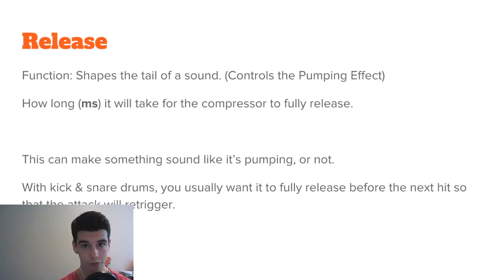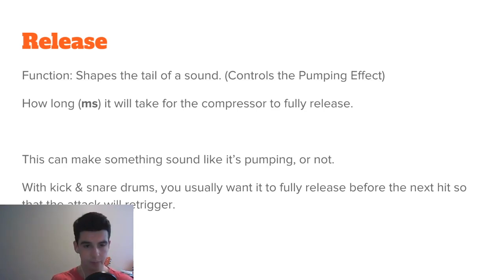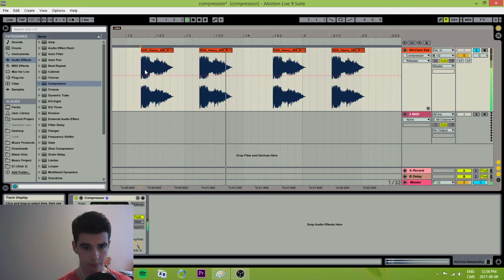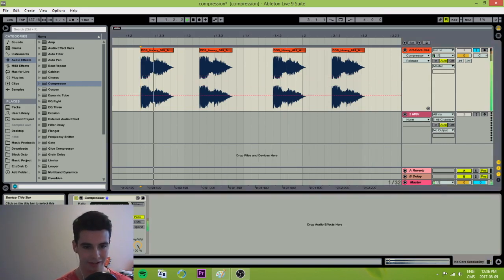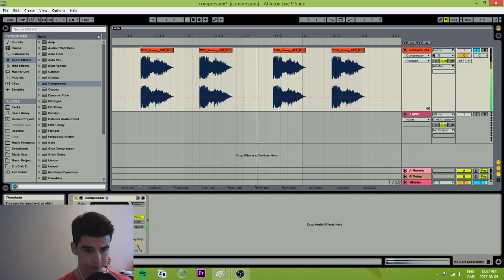Let's talk about the release now. The function of the release is to shape the tail of a sound — it basically controls the pumping effect that you hear coming out of a compressor. The release is how long in milliseconds it will take for the compressor to fully release and let go. This can make something sound like it's pumping or pump-less — it's a taste thing. With kick and snare drums, you usually want it to fully release before the next hit so that the attack will re-trigger. If you have a long release, your first snare is going to be punchy and then your second and third won't be punchy at all. So you want the release to come back before the next hit. You can see the gain reduction, which I'm going to be talking about in just a second.